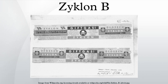Mechanism: hydrogen cyanide is a poisonous gas that interferes with cellular respiration. Cyanide prevents the cell from producing ATP by binding to one of the proteins involved in the electron transport chain. This protein,